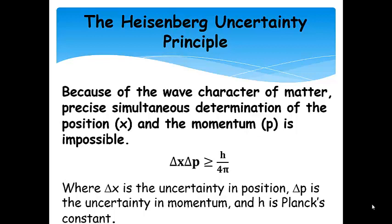Okay. So, the Heisenberg Uncertainty Principle. This comes out of the fact that matter has wave characteristics. And because of this, because of this wave character, precise, simultaneous determination of the position of a small particle and its momentum is impossible. So, not just improbable, not just maybe, not just really hard, it's impossible.